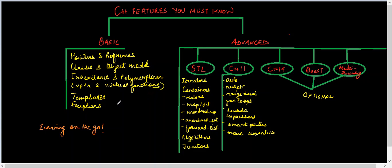So let's move on to the advanced section where we discuss other technologies in C++ which you must know. Out of this, STL and C++11 is a must-know. The other three which is C++14, boost, and multithreading are optional. Let's go into each one of them one by one.